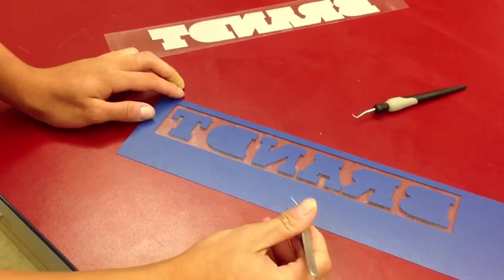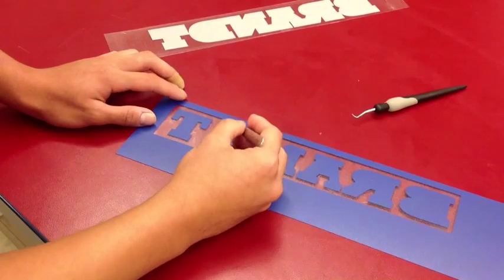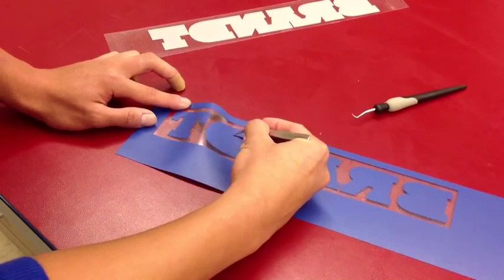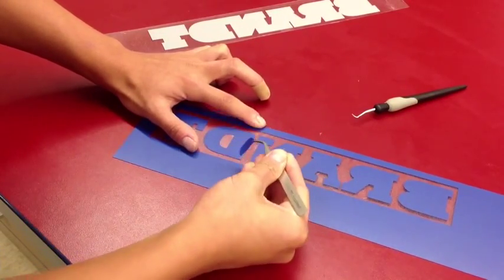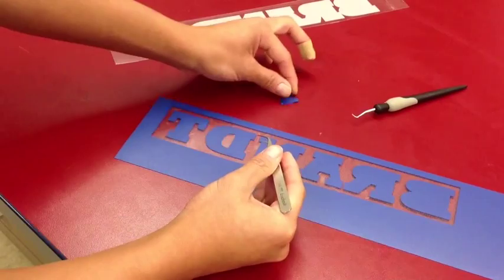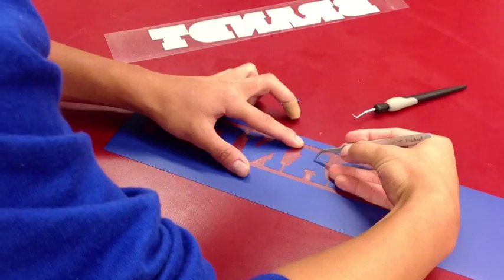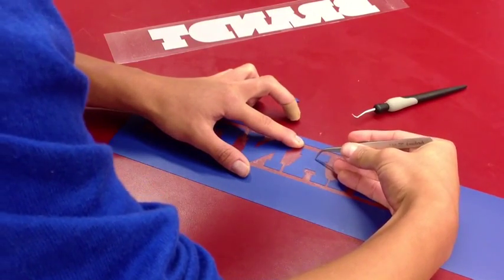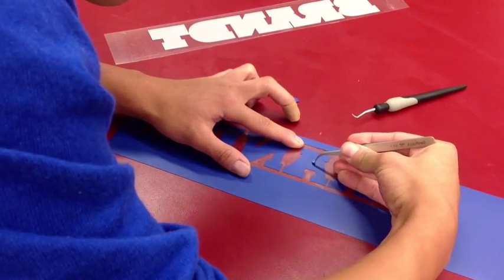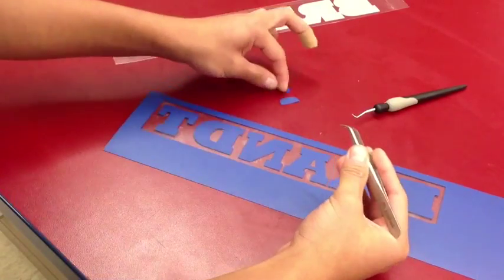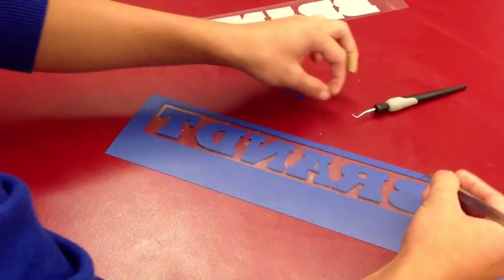Once you're done weeding, then you can go back in with the tweezers or the weeding tool to remove any of the centers of your design that didn't come off in the initial weeding process. So here, we're going to pick out the centers by grabbing and pulling off the vinyl inside those areas. The tips of the tweezers can be an effective tool to remove those areas. Proceed until you have your entire design weeded and then we will be ready to transfer it to the shirt.